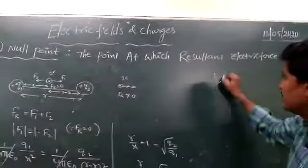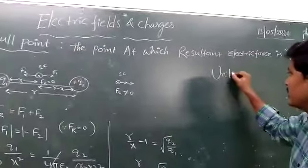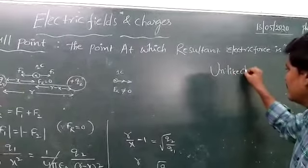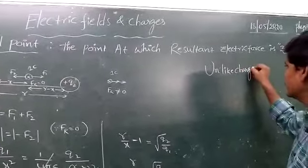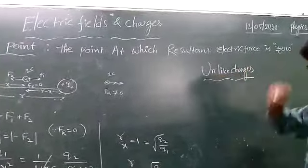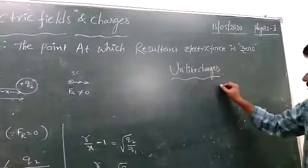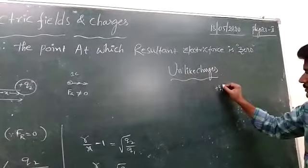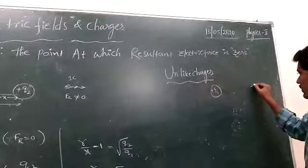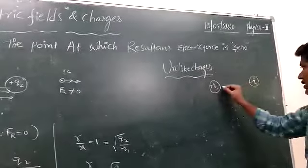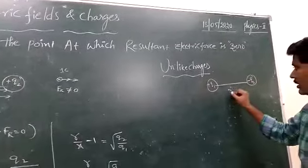Next, unlike charges. For unlike charges, this is plus Q1 and minus Q2. These two charges are separated by a distance R.